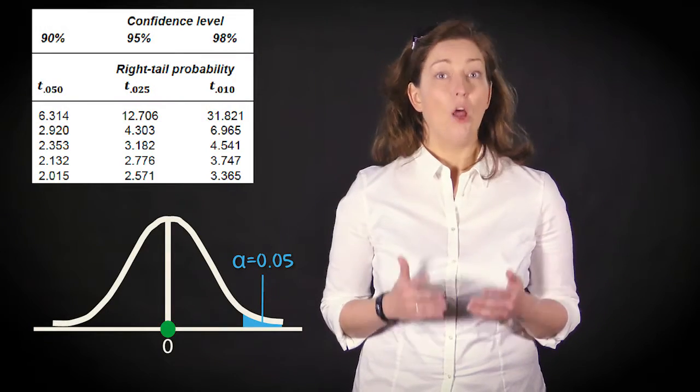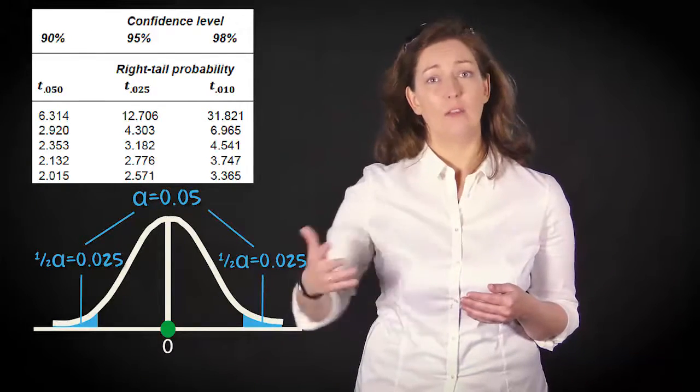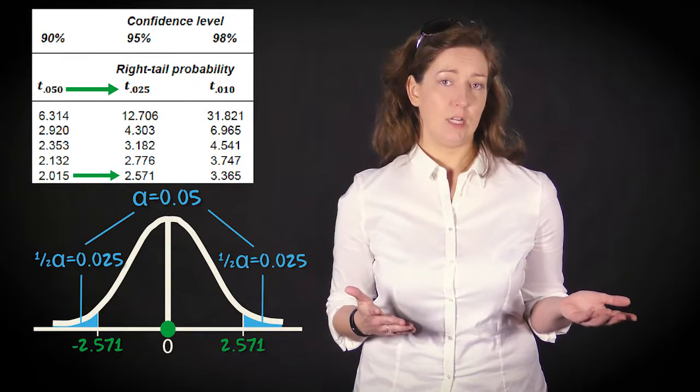If you're performing a two-sided test, remember to halve the significance level and consider two critical regions, one in the left tail and one in the right tail of the test statistic distribution.